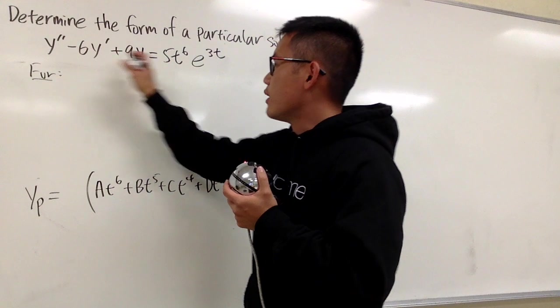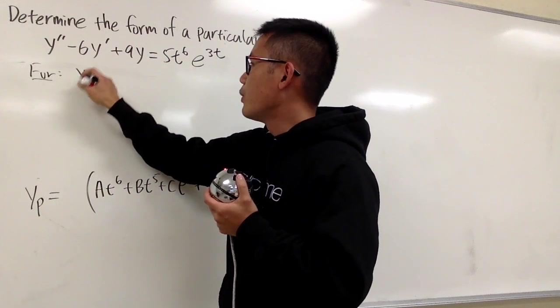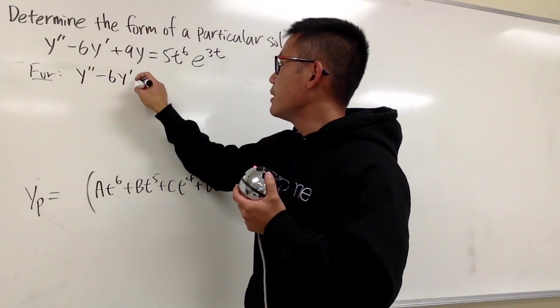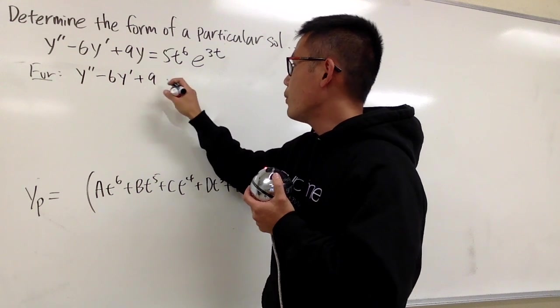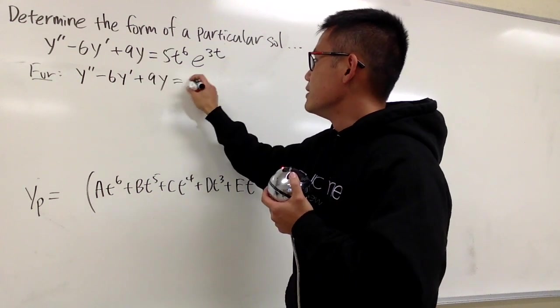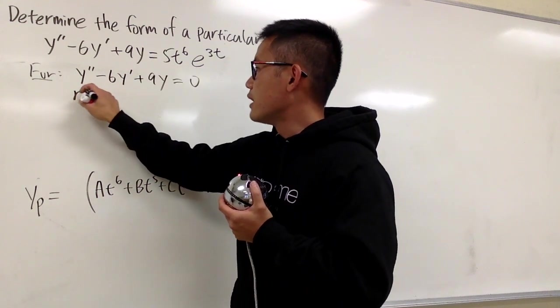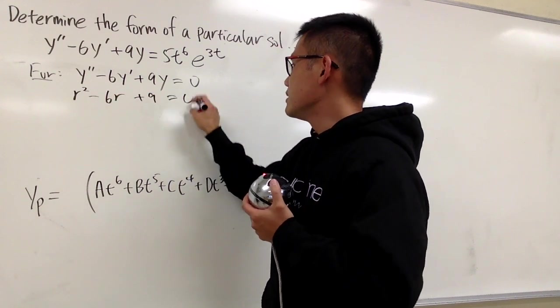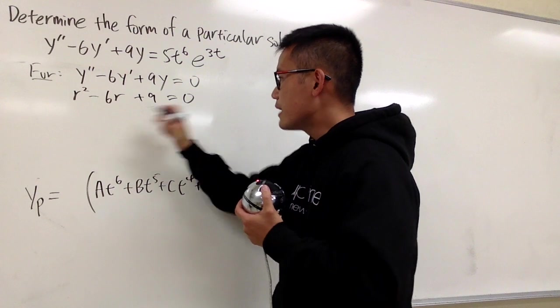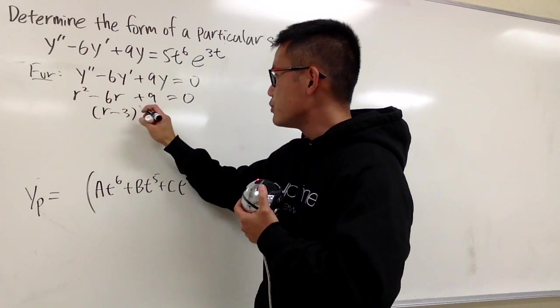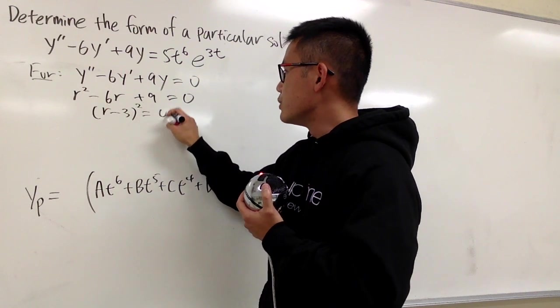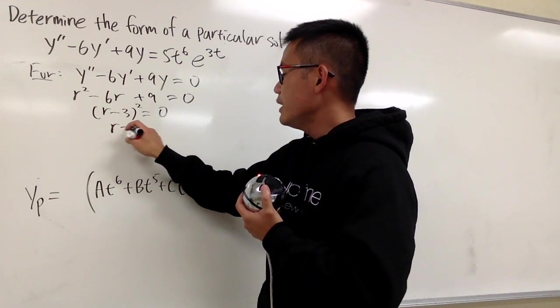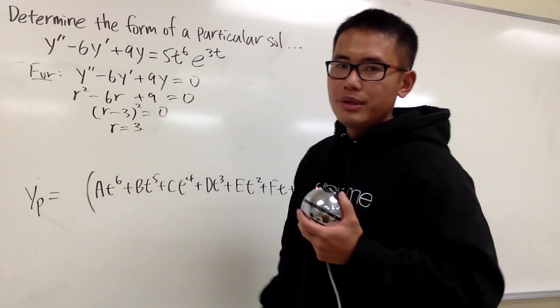Well, I'm going to look at the homogeneous situation. So I'm talking about y double prime minus 6y prime plus 9y, this is equal to 0. I'll change this to r squared minus 6r plus 9 equal to 0. And I'll factor this. This is r minus 3 times r minus 3, so r minus 3 squared equal to 0. And you see this is r equals to 3.